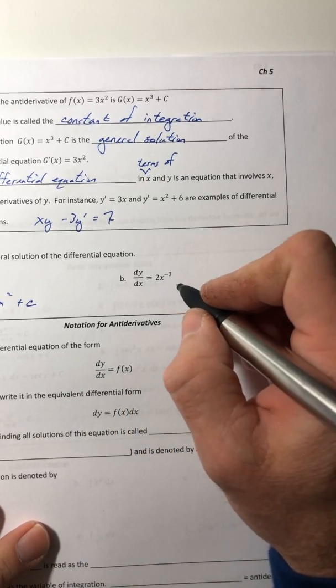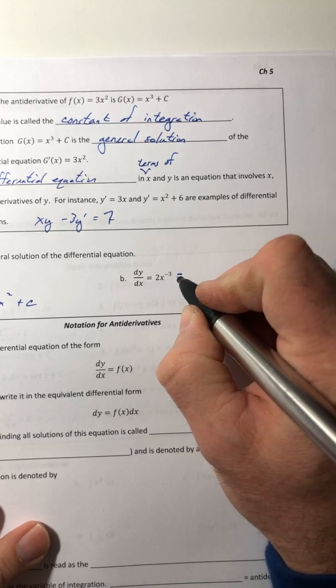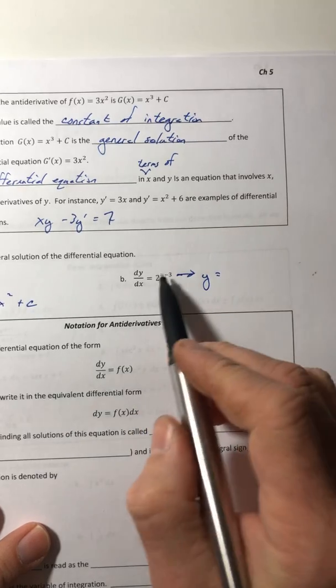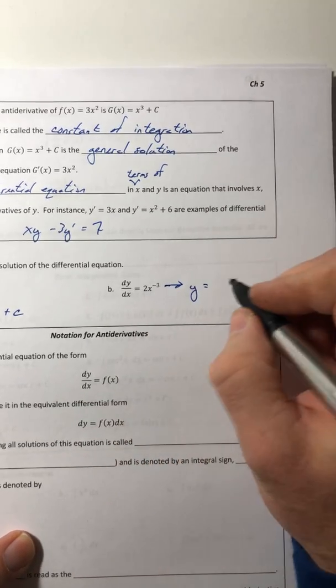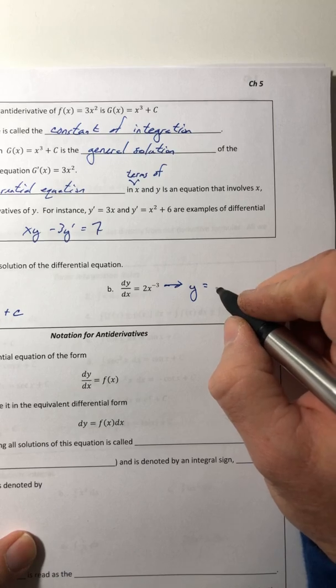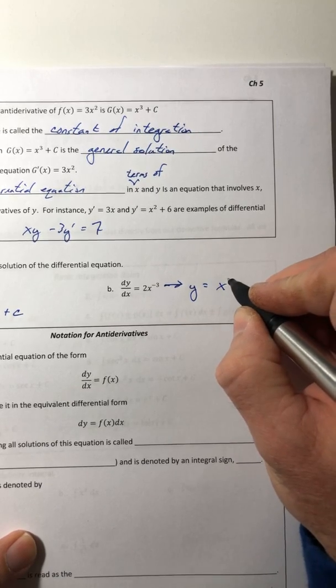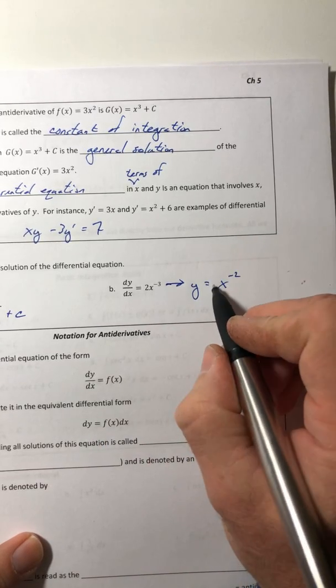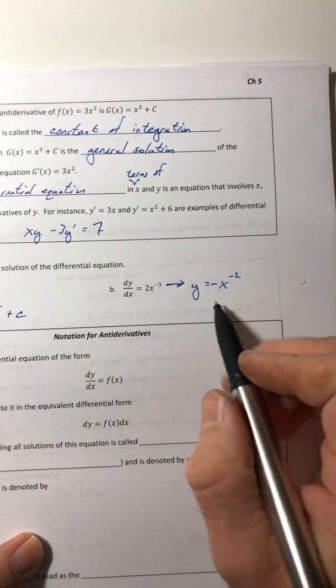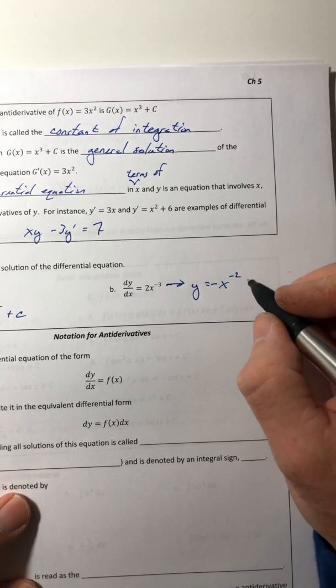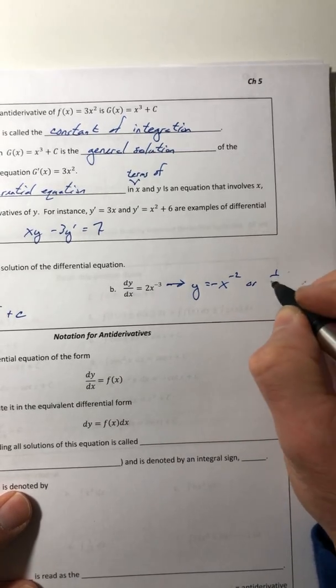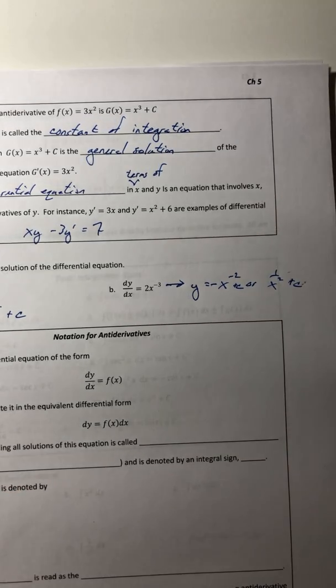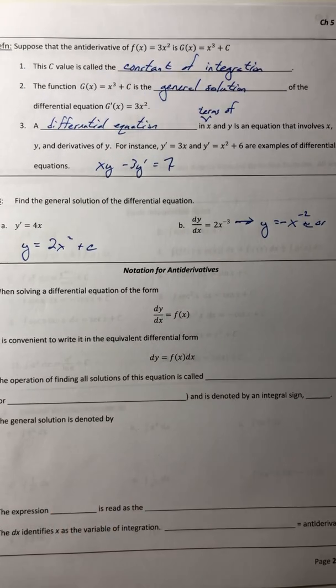And then this one, 2x to the negative third. So whose derivative is this? Well, if we kind of reverse that power rule, it would be x to the negative 2, but I wanted it to be positive. So when I pull this down, I've got to cancel out that negative. So negative x to the negative 2, or you could flip it. Oops, I forgot my plus c. Plus c. That's a pretty good intro to this anti-derivative stuff.